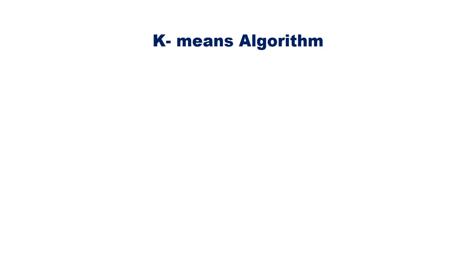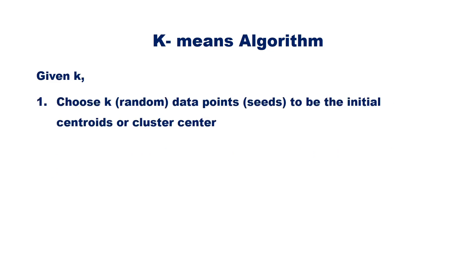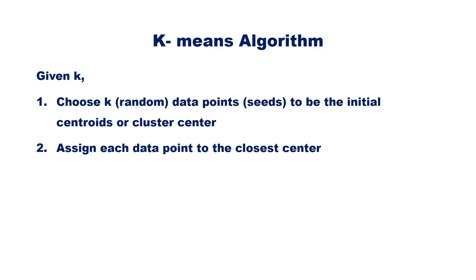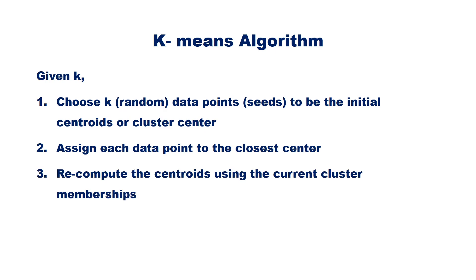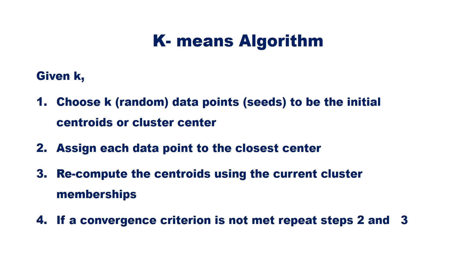Let us discuss the steps in the algorithm. Given k, choose k random data points or seeds to be the initial centroids or cluster centers. Assign each data point to the closest center. Recompute the centroid using the current cluster memberships. If a convergence criterion is not met, repeat steps two and three.